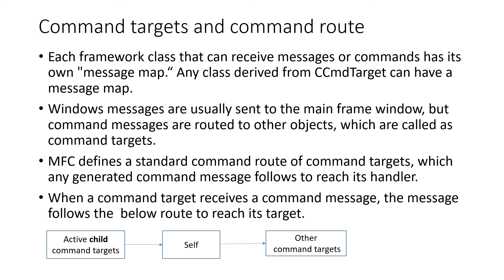MFC defines a standard command route that any generated command message follows to reach its handler. Generally, when a command target receives a command message, it first redirects it to its active child command targets, then checks if it can handle it itself; otherwise, it forwards the message to other command targets.